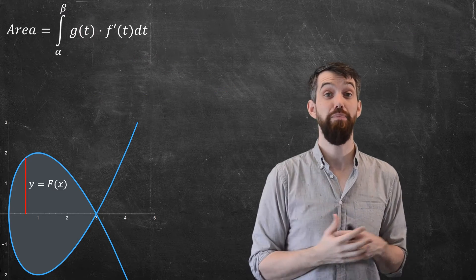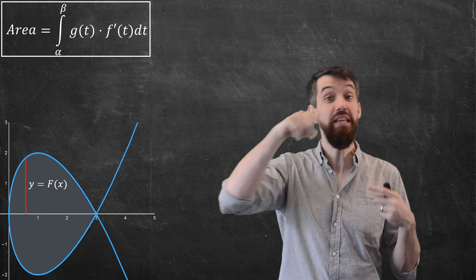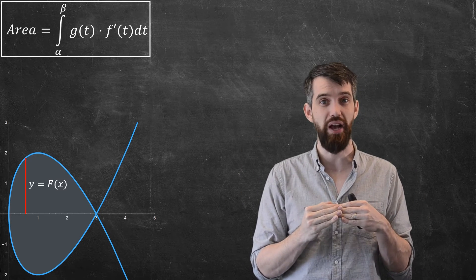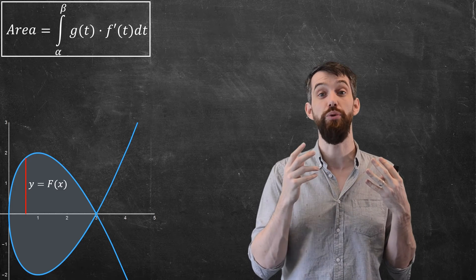So capital F of lowercase of f of t is nothing but g of t. Alright, so that's my formula for the area beneath some parametric curve down to the x-axis and in between the endpoints of t equal to alpha and t equal to beta.